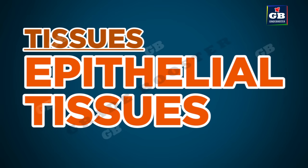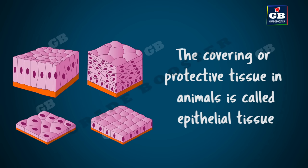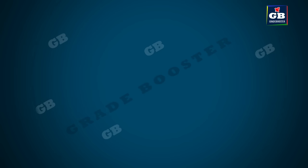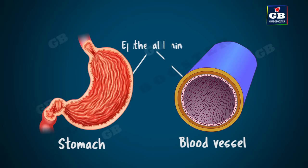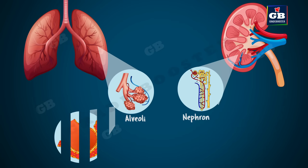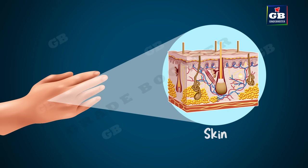Now let us learn about epithelial tissue. The covering or protective tissue in animals is called epithelial tissue. Almost all organs and their inner cavities are covered by epithelium. The outer as well as inner surface of organs like the stomach and blood vessels are covered by epithelium. The alveoli of lungs and renal tubules of kidneys are made up of epithelial tissue. Our body's external surface — our skin — is also a kind of epithelium.